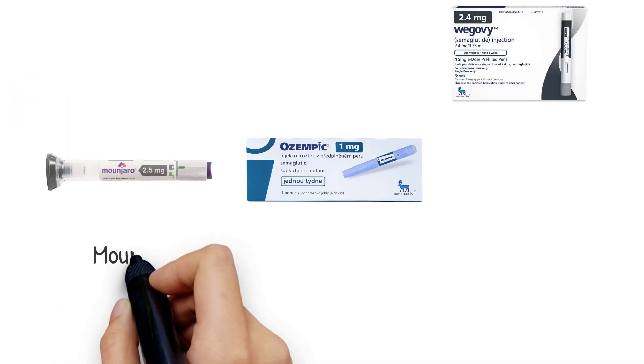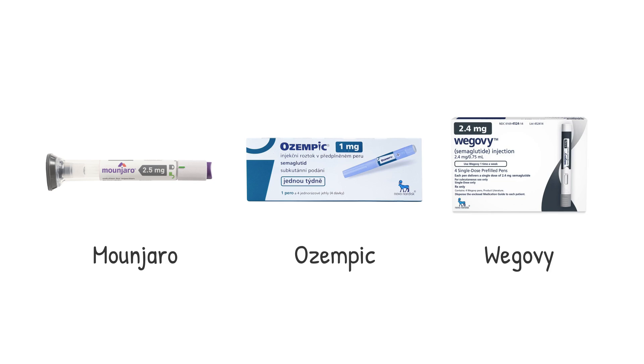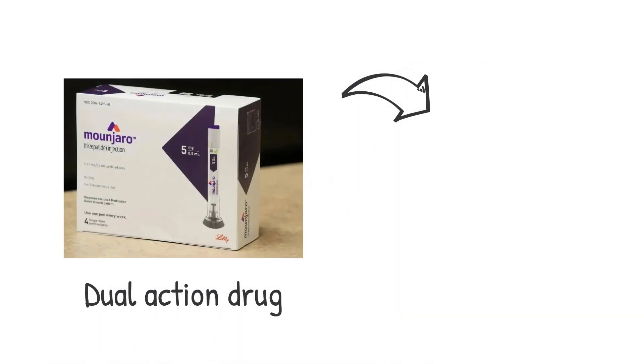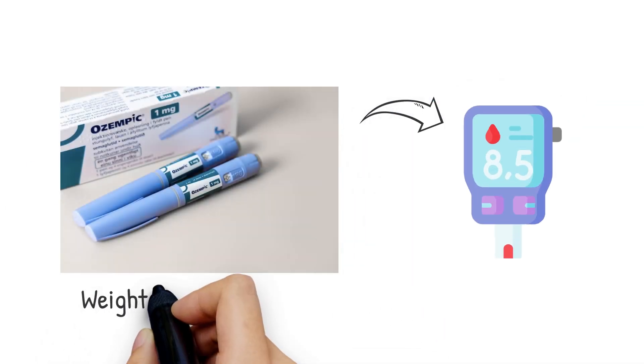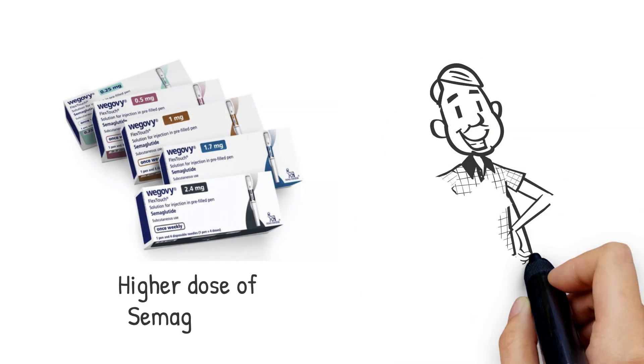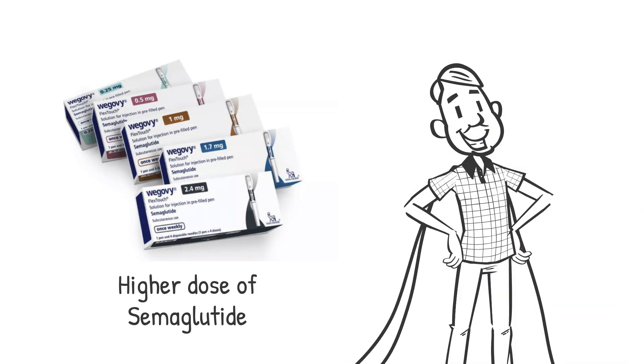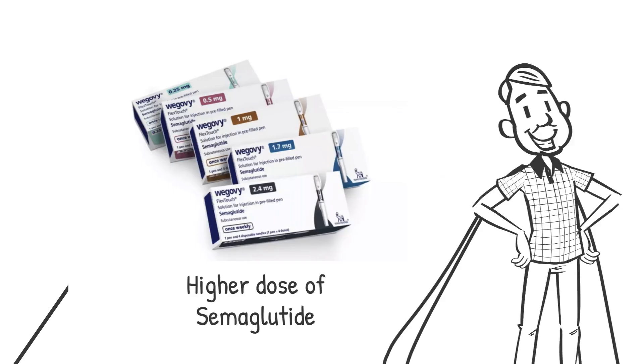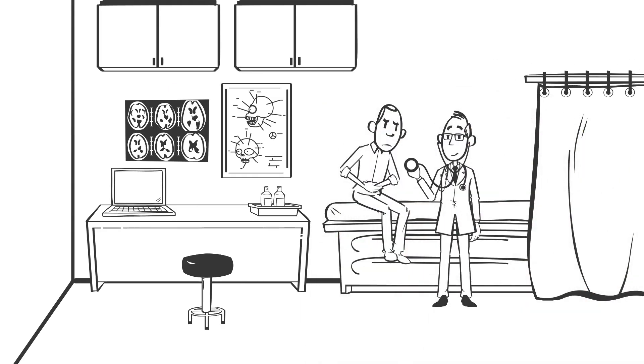In conclusion, all three medications—Monjaro, Ozempic, and Wegovy—have proven effective in both diabetes management and weight loss, but each has its own unique features. Monjaro's dual action on two hormones is promising. Ozempic is a reliable choice for those focused on diabetes with some weight loss, and Wegovy with its higher dose of semaglutide is great for those looking to focus primarily on weight loss. Always consult with a healthcare provider to see which medication is best suited for your needs.